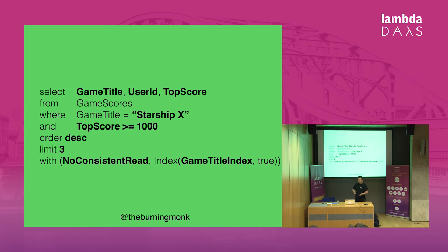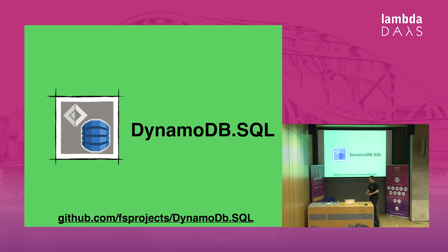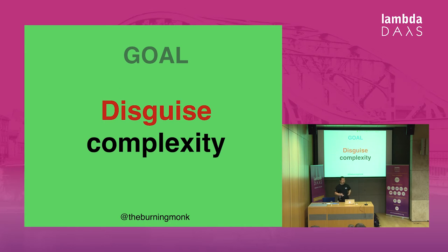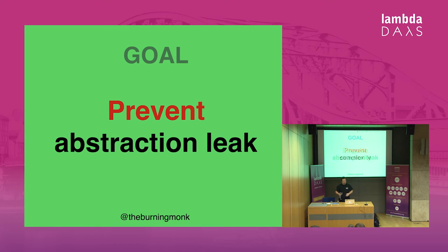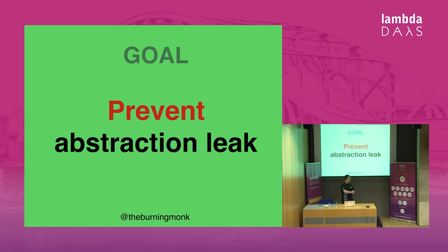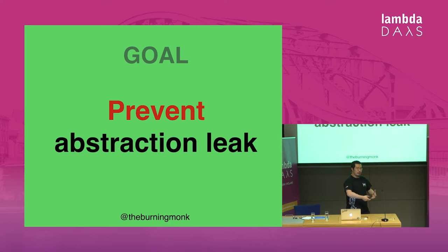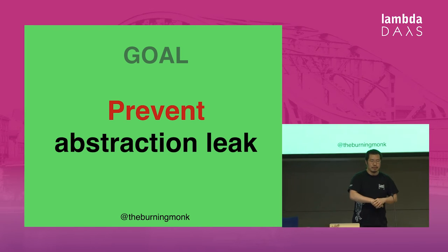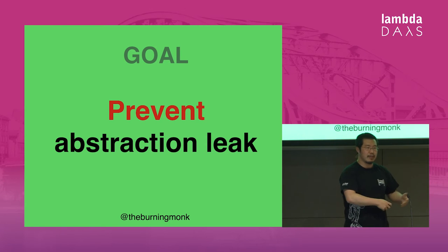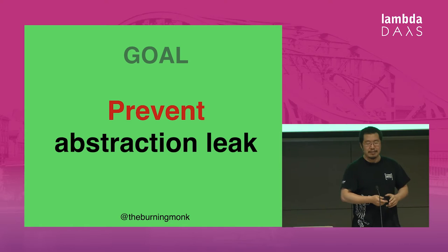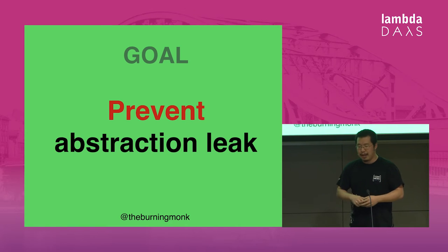Wouldn't it be nice if I could write something like this instead? It's very similar to SQL and something most developers are already familiar with, and it's also a lot shorter. That's why I went ahead and wrote a library called DynamoDB.SQL, with the goal of disguising some of the complexities associated with the query and scan APIs and helping prevent abstraction leaks — because often when you've got a very complicated abstraction, rather than wrapping around it, you just end up using what Amazon provides through the SDK, which is what happened in my last job.